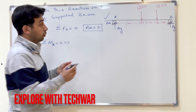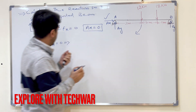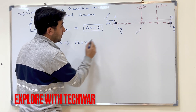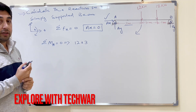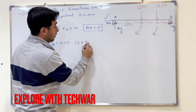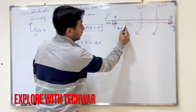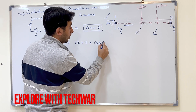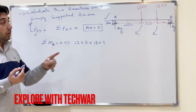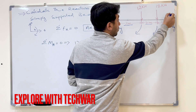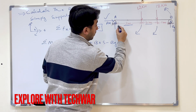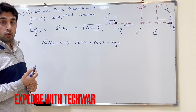The forces producing moments about A are 12 kN, 18 kN, and BY. The 12 kN force produces a clockwise moment, so it is positive: plus 12 times 3. The 18 kN force also produces a clockwise moment: plus 18 times 5 (distance of 3 plus 2 meters). BY produces an anti-clockwise moment: minus BY times 6.